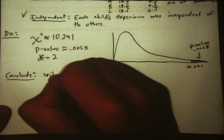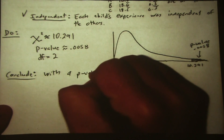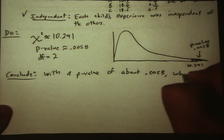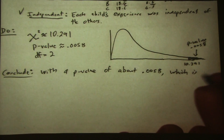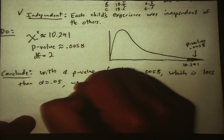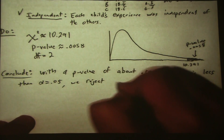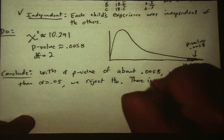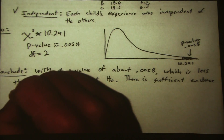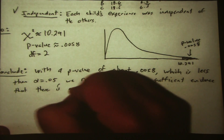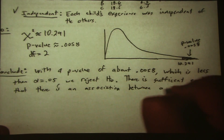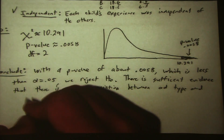Conclude: with a p-value of about 0.0058, which is less than alpha of 0.05, we reject the null hypothesis. There is sufficient evidence that there is an association between ad type and children's snack choice.